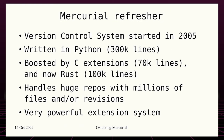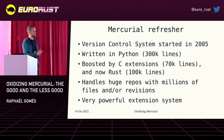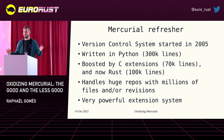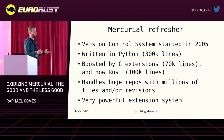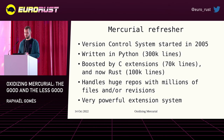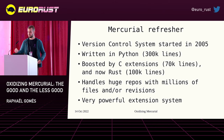For those who are not familiar, Mercurial is a version control system that was started around the same time as Git in 2005. It's mostly written in Python. There have been C extensions since basically the beginning, because what would you do in 2005 for performance? And now Rust, with way too much code — and I'm responsible for half of it. It handles huge repositories with millions of files and revisions, and has a very powerful extension system.